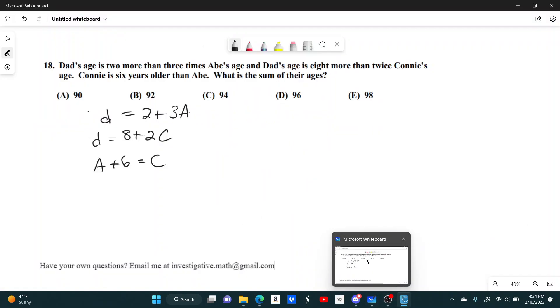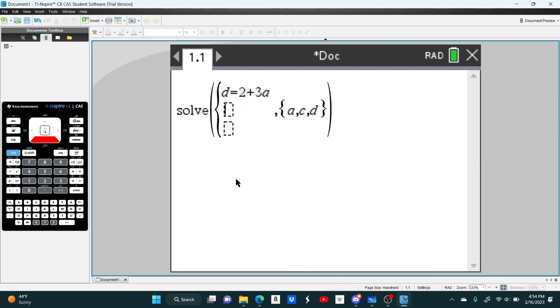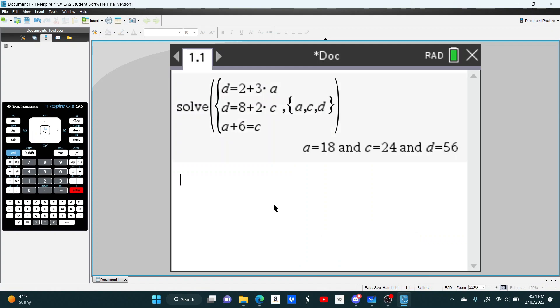And then D equals 8 plus 2C. And then finally, the last one is A plus 6 equals C. We get ages of 18, 24, and 56.